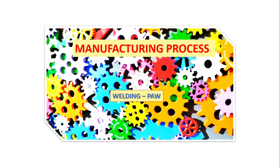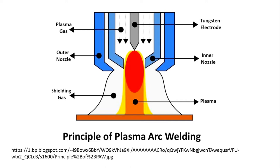Today we will see about the plasma welding process, which comes under manufacturing technology. If you see this figure, you can see two nozzles — one is the outer nozzle and another is the inner nozzle. Between the electrode and the inner nozzle we are supplying shielding gas, and the gap between the two nozzles is also filled by shielding gas. The first gas is the plasma gas — you can use the same shielding gas or, if you want, you can use some other gases as the plasma gas.